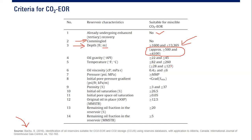The sixth criterion is viscosity, ideally between 0.4 and 6 cp. Above 6 cp is heavy or viscous oil, which is not good for CO2 EOR. Because CO2 has high mobility compared to oil, if the oil is viscous, the CO2 will simply bypass the oil — moving through very fast while the oil is left behind, which is not good.